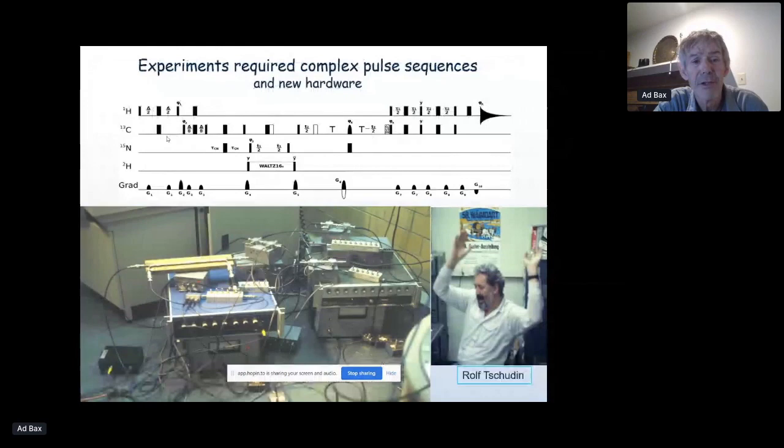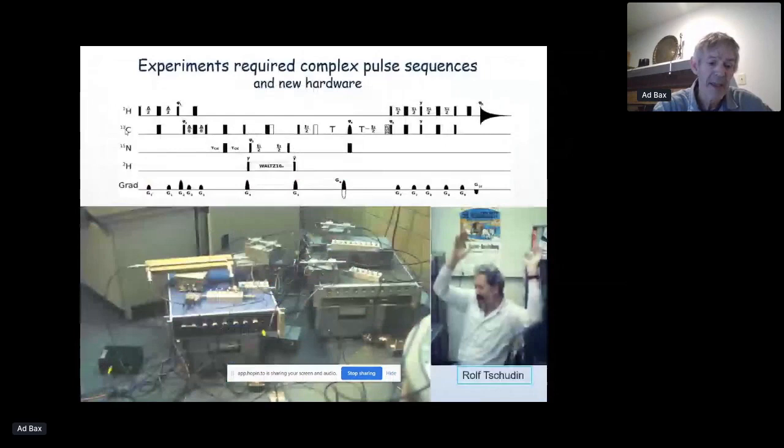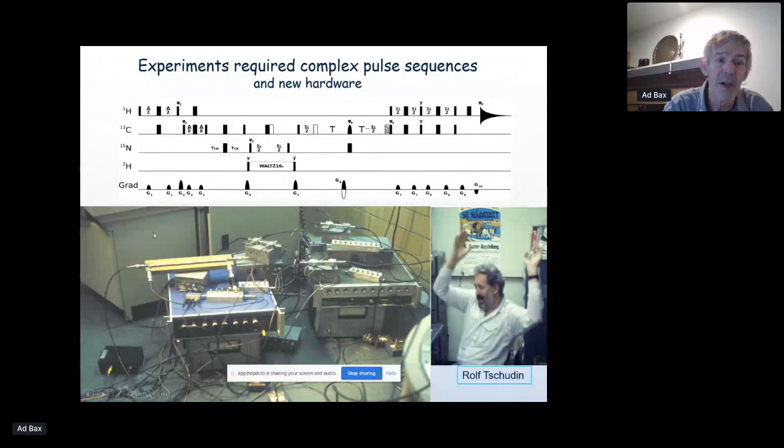Now, it wasn't easy to do. You can have an idea, but there was no spectrometer that would be able to do this kind of thing because even the brand new spectrometer that we got, that actually I should say Dennis Torchia got, a Bruker AM500, only had two channels. You could run proton and carbon-13 or proton and nitrogen, but that was it. So if you wanted to do triple resonance, you've got to be able to pulse on the third channel.